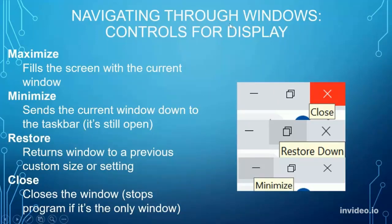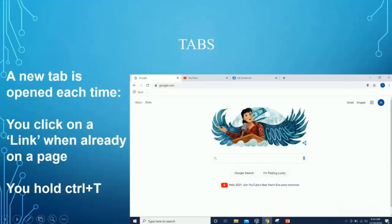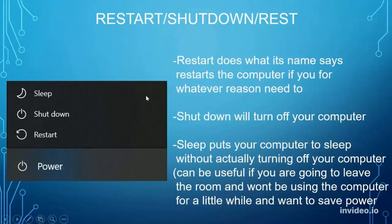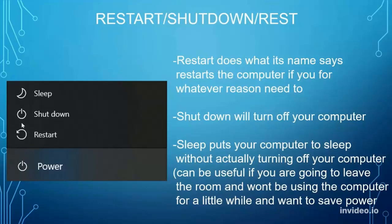Now quickly about navigating windows and controls for display. On the top right you have an X, a little square, and a line. The X closes the window completely. The square — restore down — shrinks it to a smaller size so you can do other things. Minimize, the line, just hides it — it doesn't close it, it puts it in the background. For power options: sleep saves what you're doing and stops without shutting down; shut down completely turns off the computer; and restart resets the computer — it turns off and then right back on.